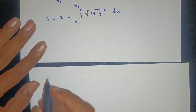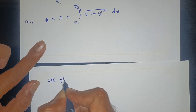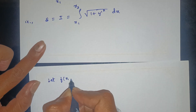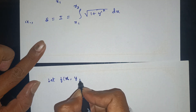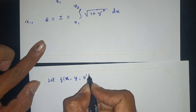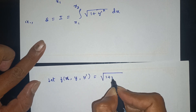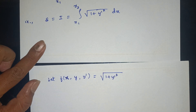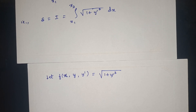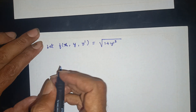Let f(x, y, y') = sqrt(1 + y'²). This is our integrand function.